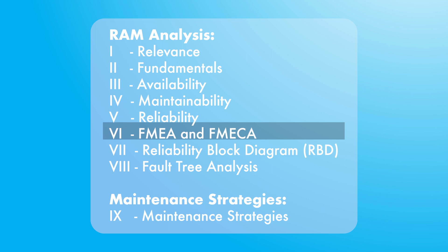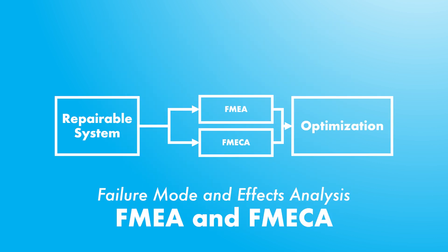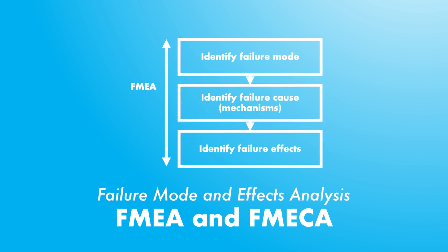We will start with Failure Modes and Effects Analysis (FMEA). In the late 1940s, the US military shifted to preventing failures rather than just fixing them. FMEA is a qualitative failure analysis method used to link potential failure modes, their mission impact or effects, and their causes or failure mechanisms. Given its significance and effectiveness, this technique is still in use today — since the focus is on failures, FMEA is essentially an approach to observe the system's reliability.